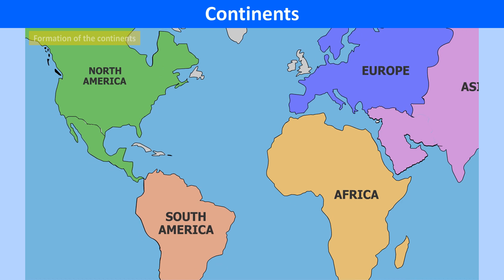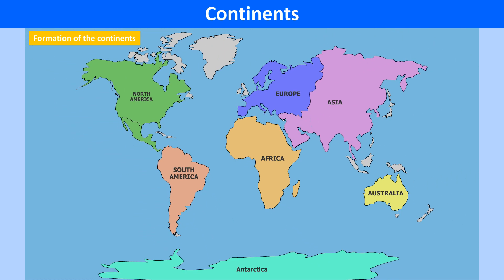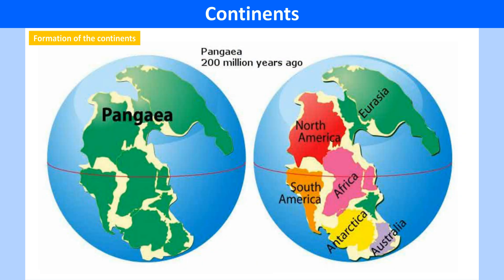Continents make up the land mass of the lithosphere. Plate tectonics may explain why we have continents. Scientists believe that all the continents were once joined together as one major land mass or giant supercontinent called Pangaea. When the lithosphere broke apart, Pangaea also split into different continents.